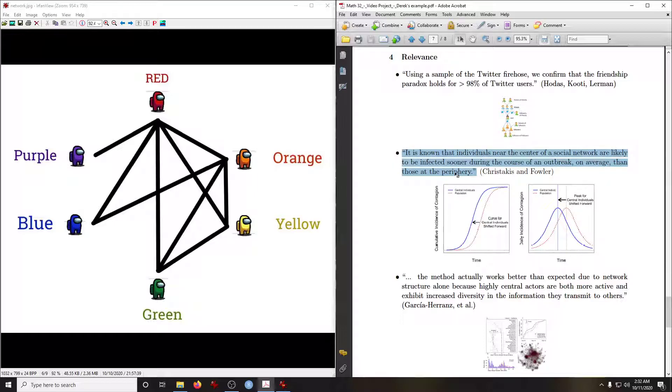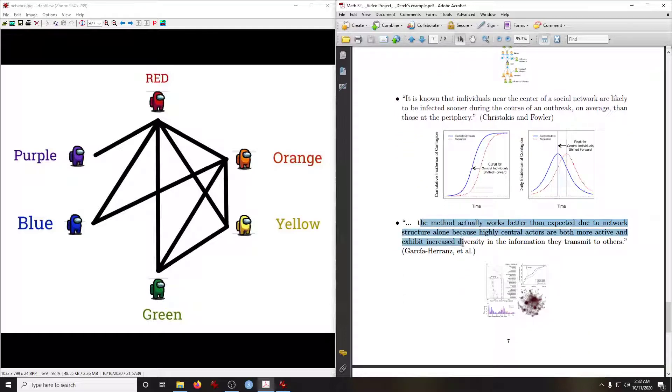In epidemiology, it is known that individuals near the center of a social network are likely to be infected sooner during the course of an outbreak on average than those at the periphery. In a follow-up paper, the method actually works better than expected due to network structure alone because high-essential actors are more active and exhibit increased diversity in the information they transmit to others.